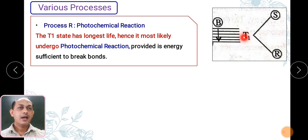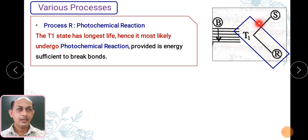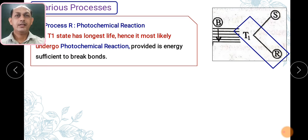Process R is the photochemical reaction. This is where the actual photochemical reaction takes place. The energy present in the T1 state is sufficient to break bonds. In this R state, the actual photochemical reaction occurs, the molecule breaks its bonds, and as a result the reactants get converted into products.